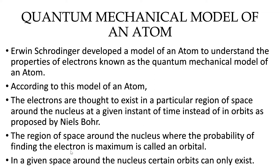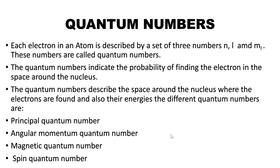The region or space around the nucleus where the probability of finding the electron is maximum is called an orbital. So in a given space around the nucleus, certain orbitals can only exist.